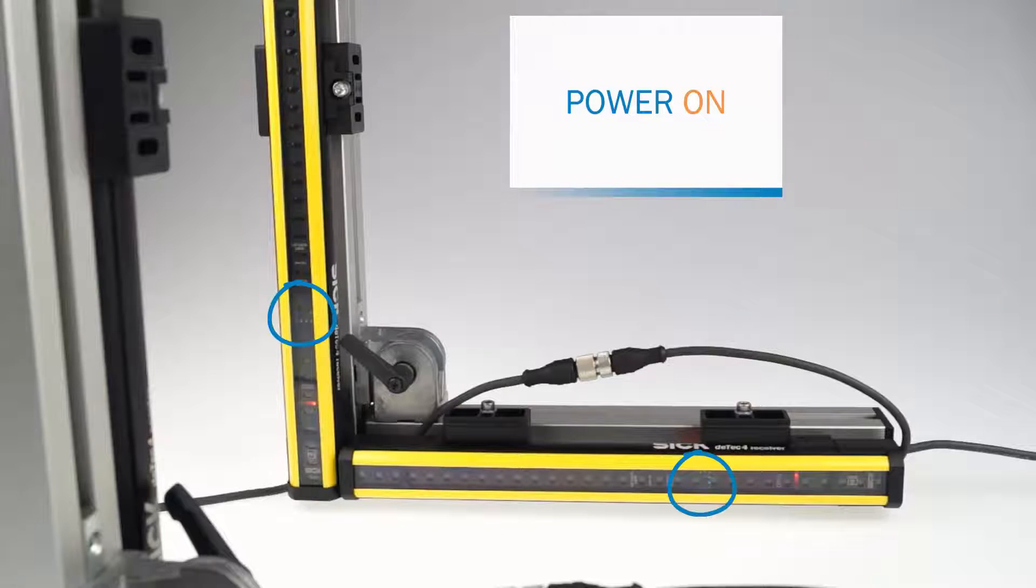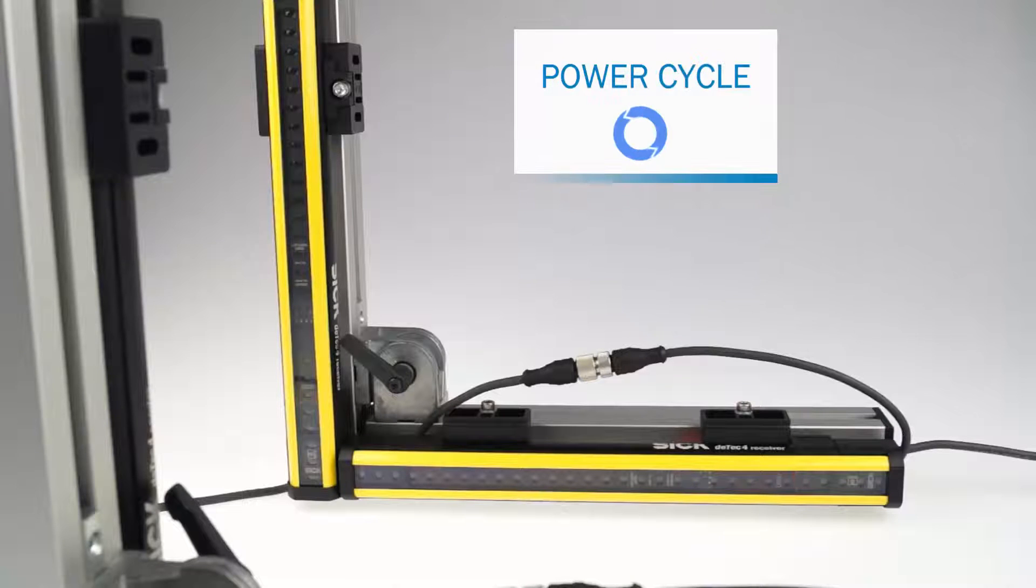Additionally, the blue alignment LED 2 is flashing to show that the host-guest cascade is configured. In case of a host-guest-guest cascade LED 2 and LED 3 would flash blue. After another power cycle, the light curtains are cascaded and fully operational again.